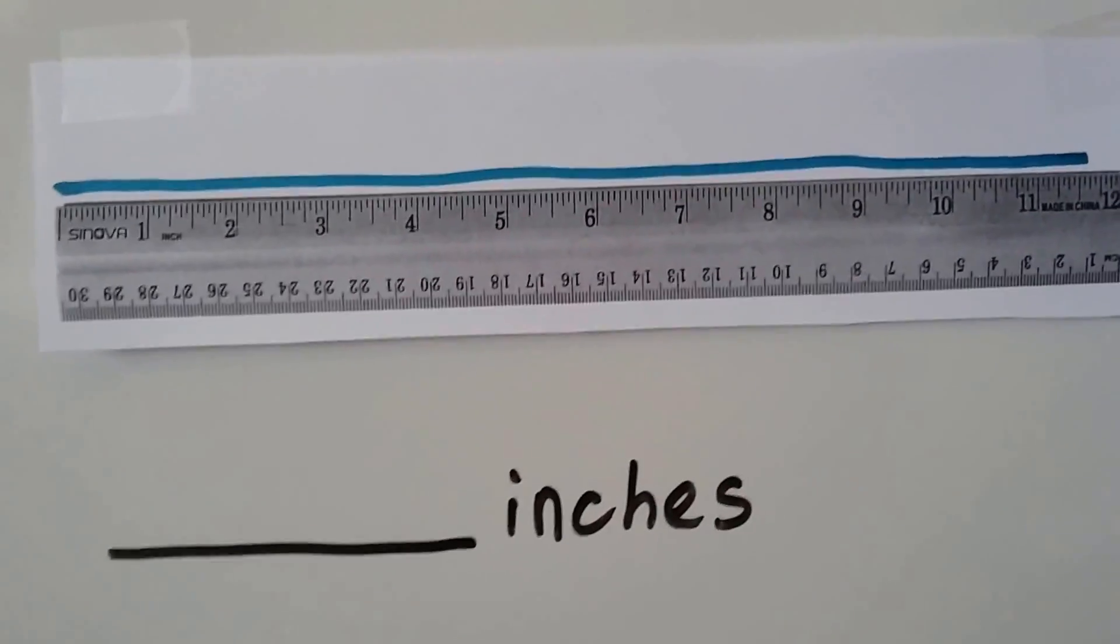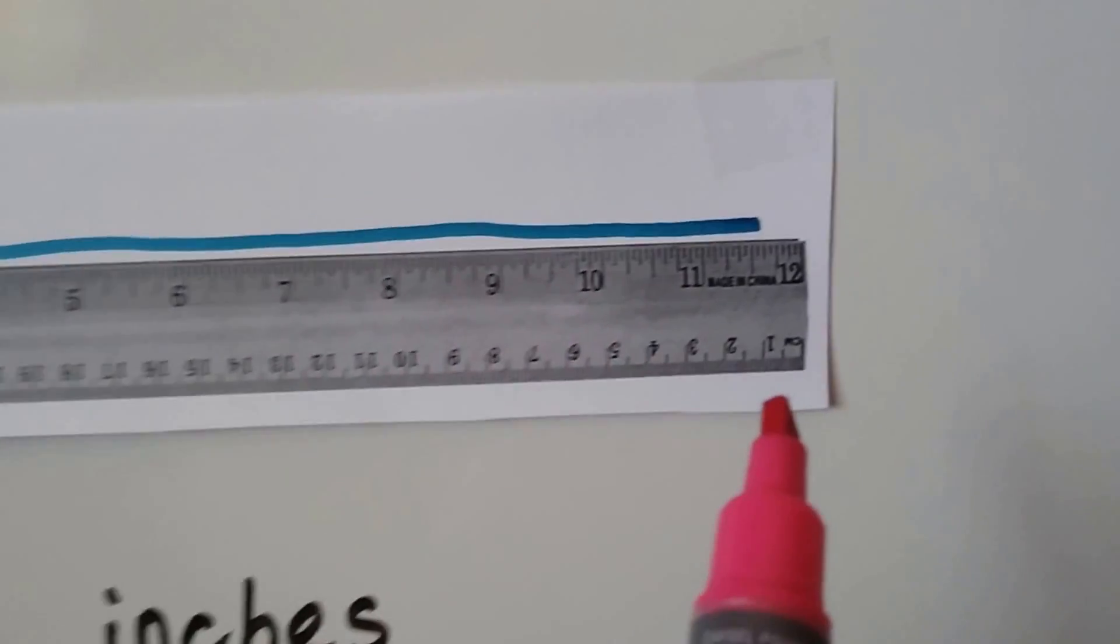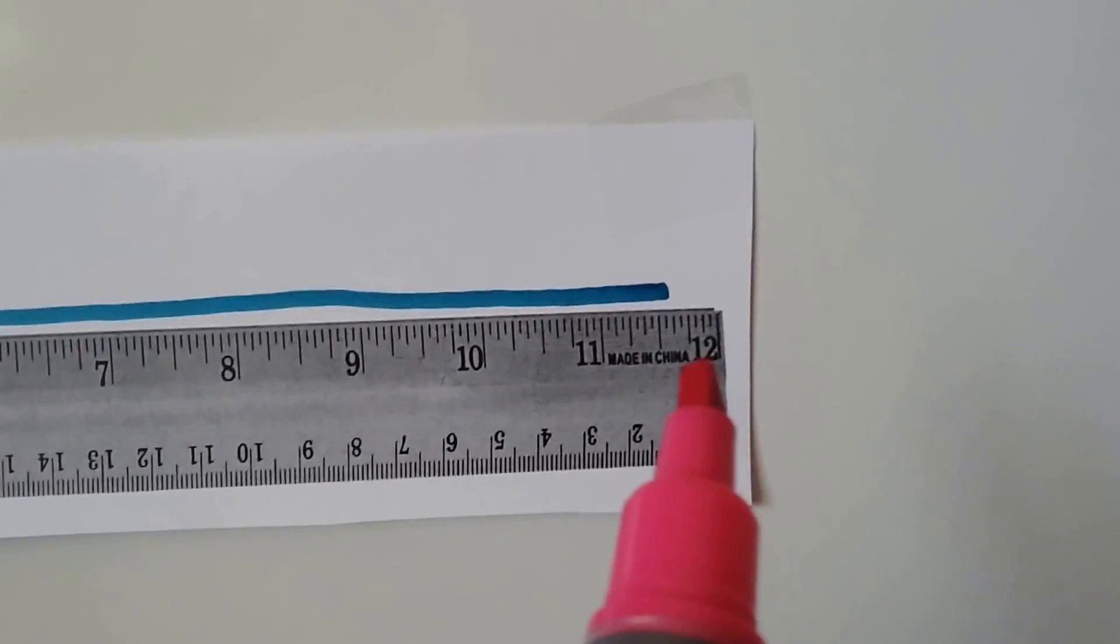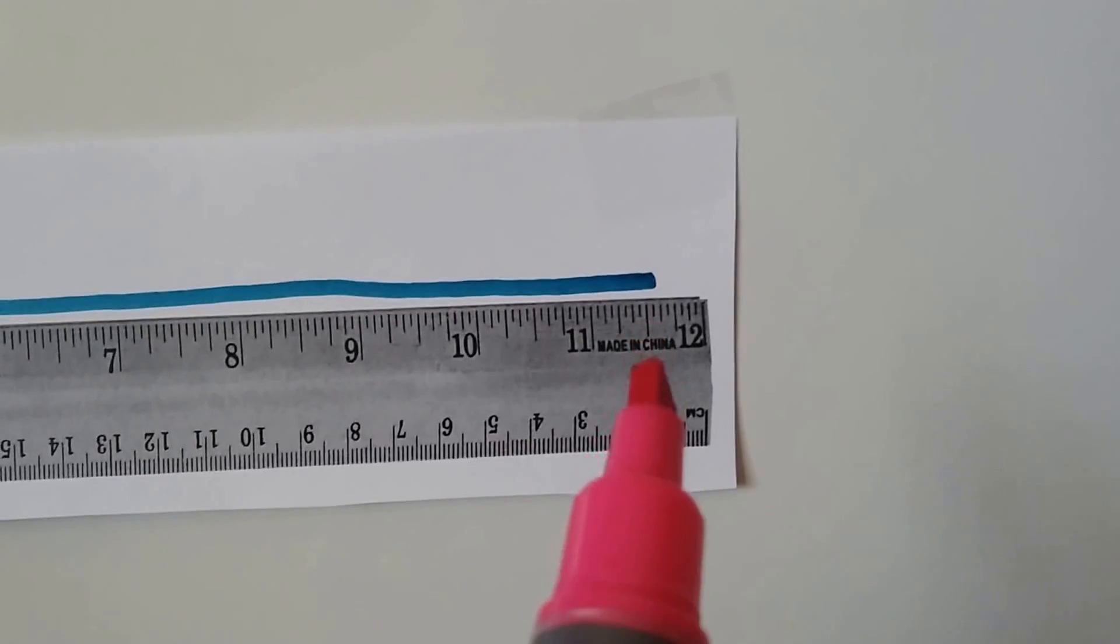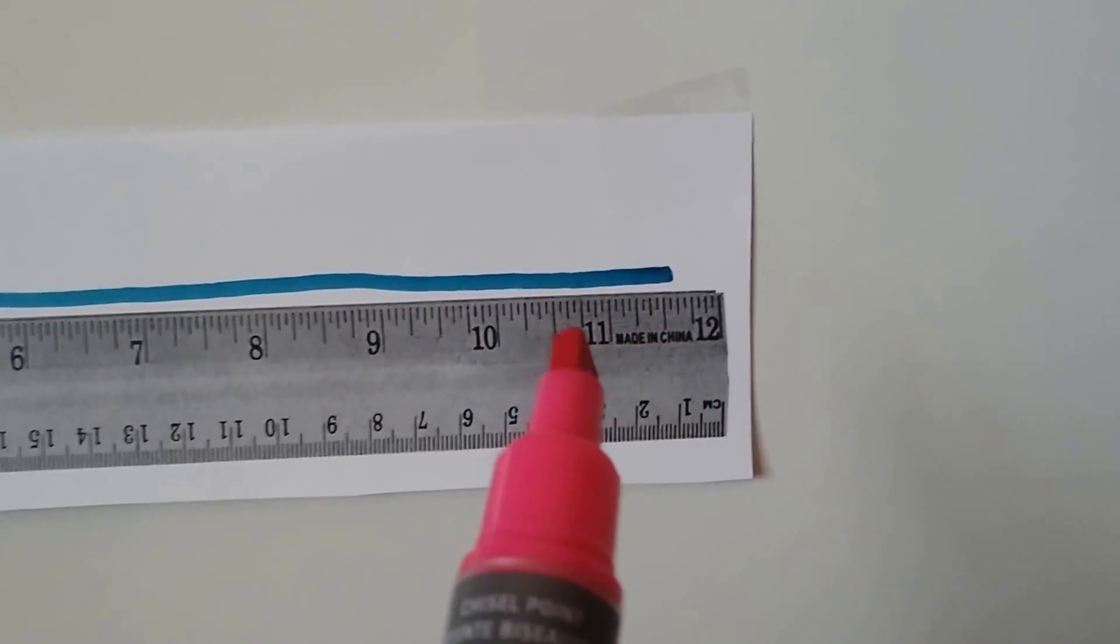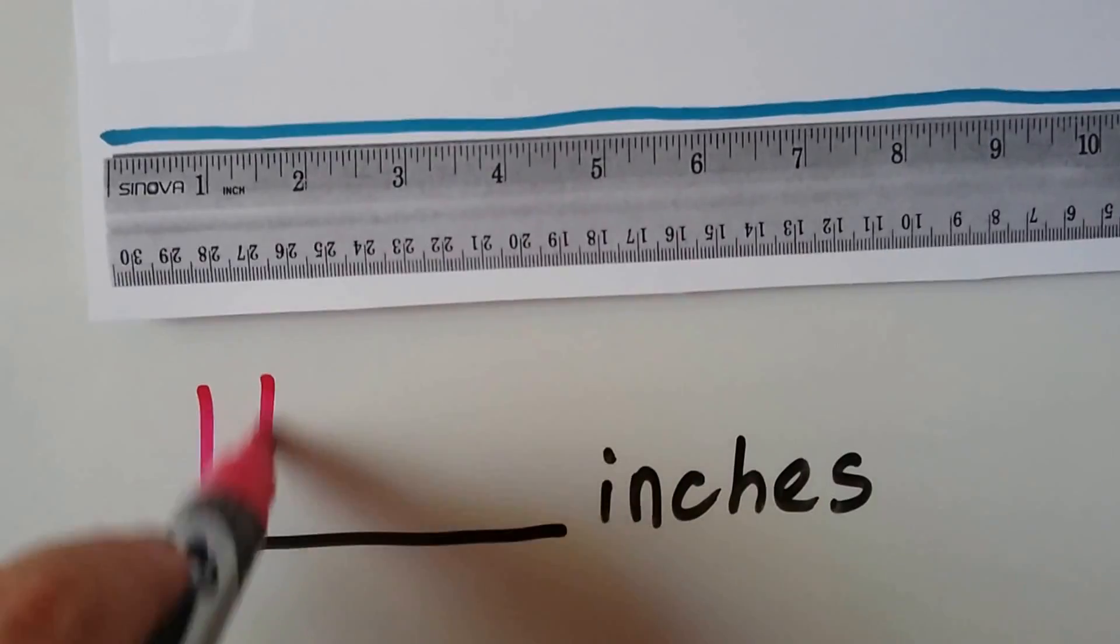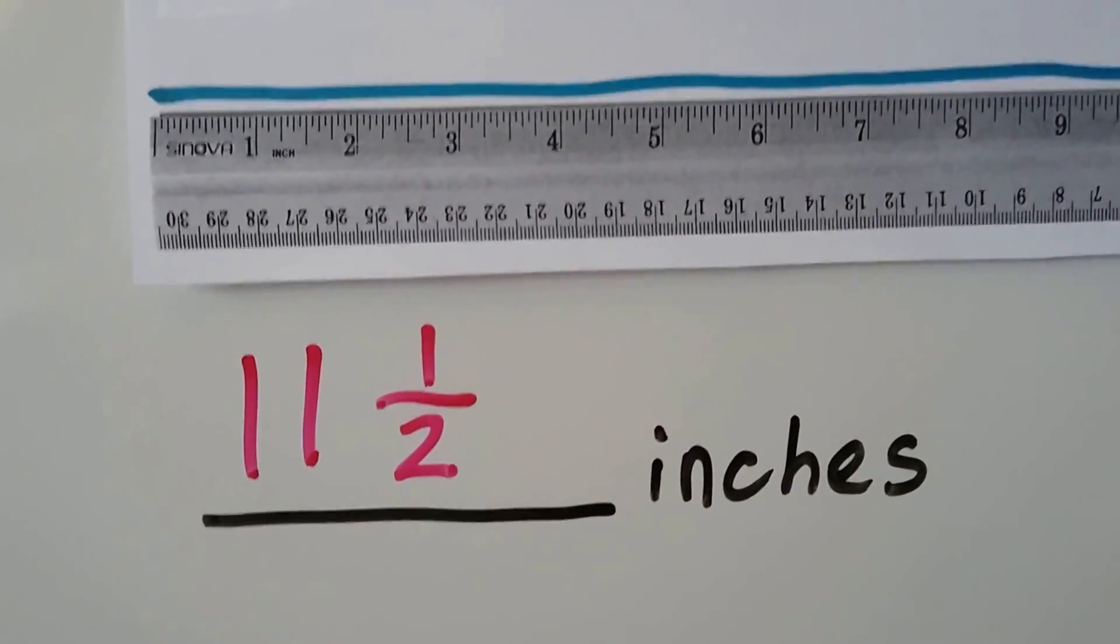All right, let's try this one. Oh, this line's long, isn't it? It almost goes to the end. Let's look over here. It passed the eleven. It didn't get to the twelve. It's in between the eleven and twelve, so it's eleven and a half. Eleven and a half.